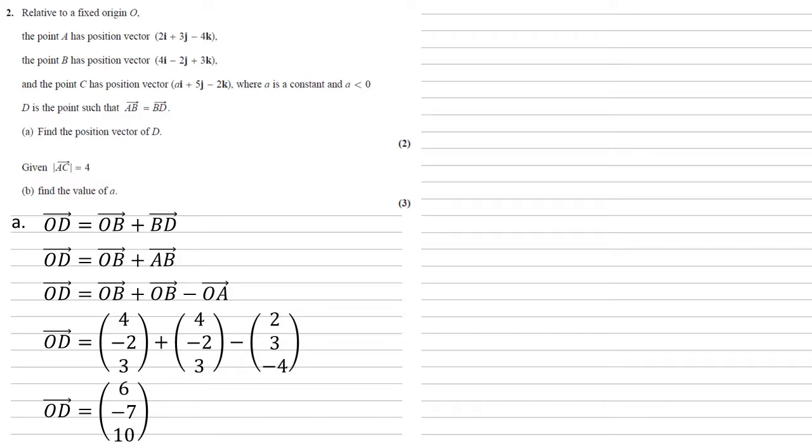So first of all, we're going to do that using our position vectors C and A. The magnitude of AC must equal the square root of (a minus 2) all squared.